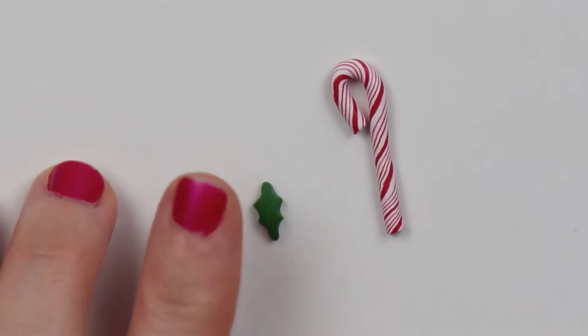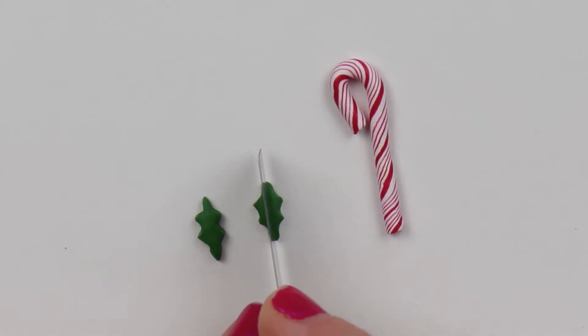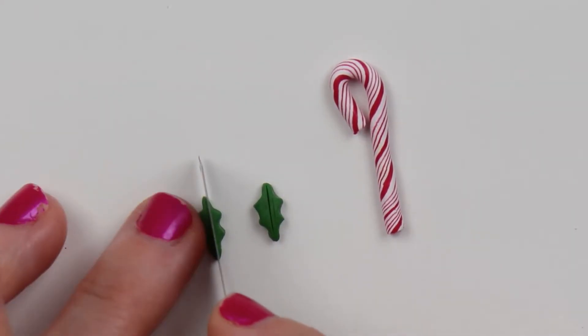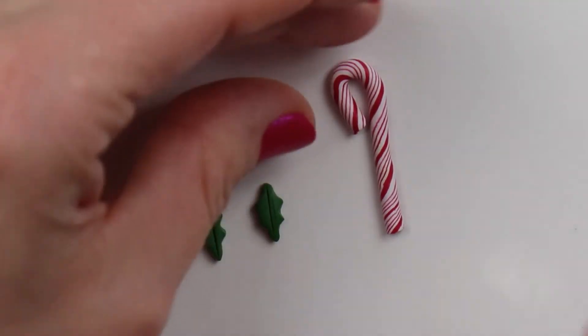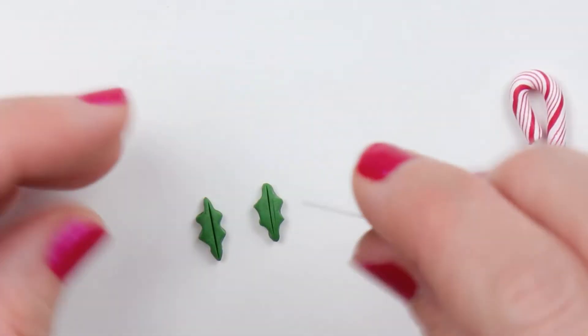And then you'll just make your lines in there for leaves. Just one down the center of each, and then your little hash lines going down the sides of each of them.